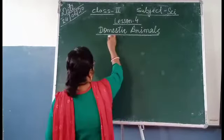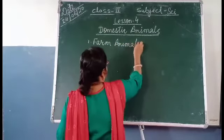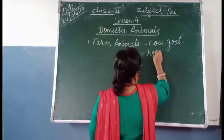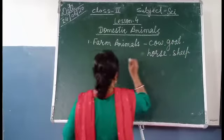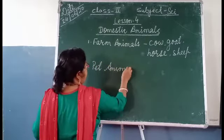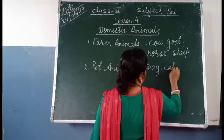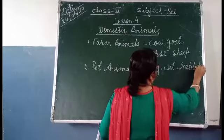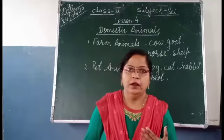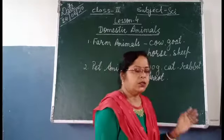Domestic animals are again categorized into two groups. First is farm animals — that is cow, goat, horse, and sheep. Second is pet animals. The animals which live with us in our home are called pet animals. Pet animals are dog, cat, rabbit, and parrot. Sometimes we also keep fish in our home as pet animals.